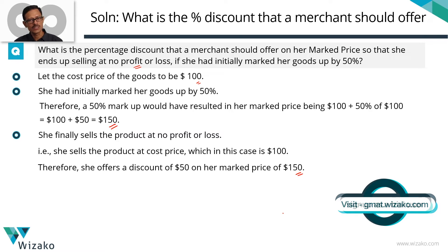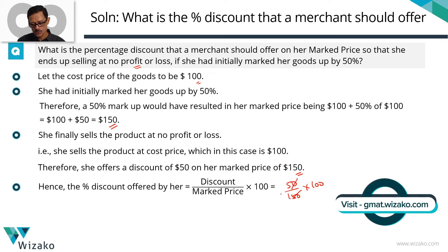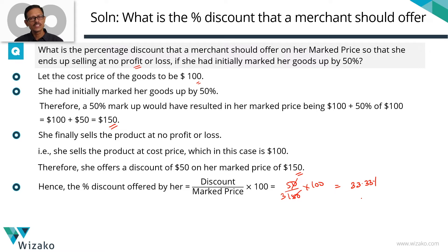How do you compute percentage discount? It's discount divided by marked price, multiplied by 100. The discount she's offering is $50, and the marked price is $150. So 50 divided by 150, multiplied by 100 — cancel out to get 100 upon 3 — which equals 33.33%. So the discount percentage offered by the merchant is 33.33%, so that she sells at no profit, no loss.